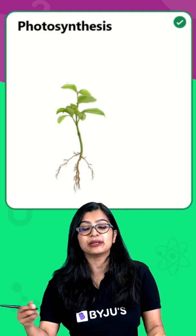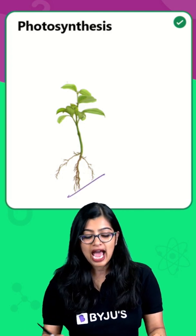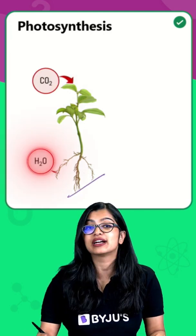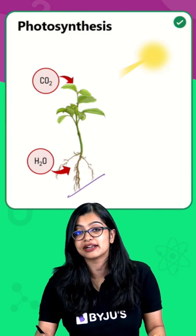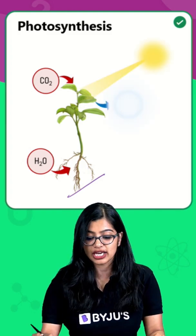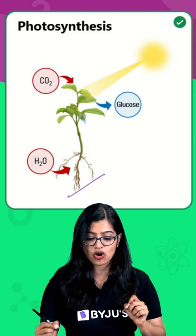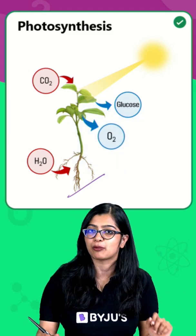Carbon dioxide and water combine in the presence of sunlight and chlorophyll to produce glucose, and we see that oxygen is produced as a by-product.